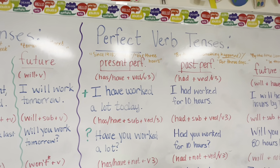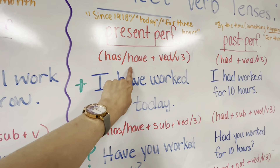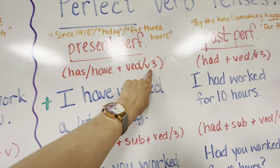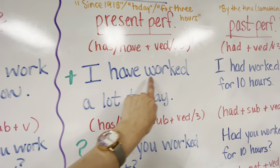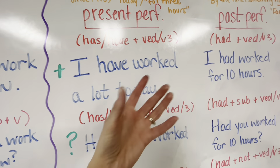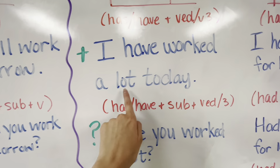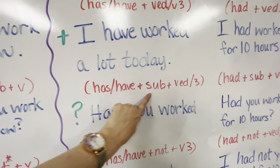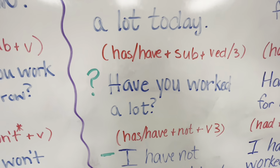Now let's move on to perfect verb tenses. Present perfect is formed by using has or have, plus the verb form with ED — the regular past tense — or the irregular third form, past participle. To make it positive: I have worked a lot today. If it was irregular, let's say the word is teach instead of work — I have taught a lot today. To make it a question: has or have, the subject, and that same verb form — have you worked a lot? Have you taught a lot?